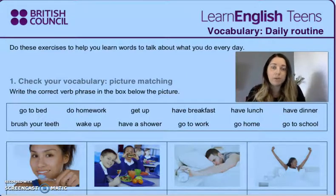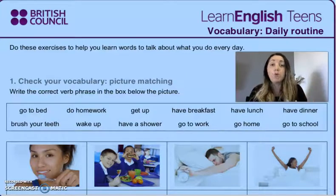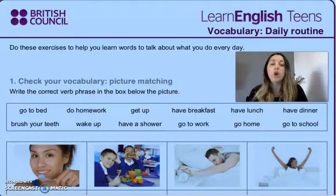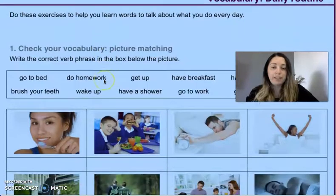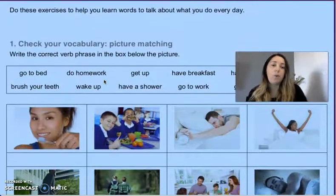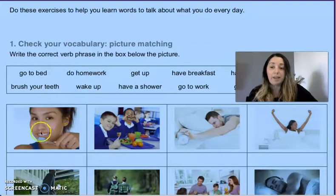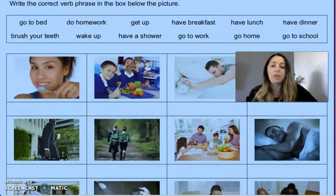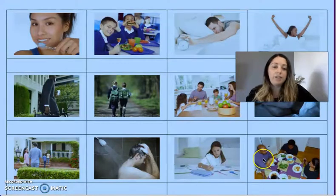You look at here — you have a box with some expressions: go to bed, do homework, get up, have breakfast, have lunch, have dinner, brush your teeth, wake up, have a shower, go to work, go home, go to school. Para esta primera actividad lo que van a hacer es mirar las imágenes y tratar de fijarse si pueden unirlas. No es necesario que las impriman — lo que pueden hacer es ponerle números a las imágenes: one, two, three, four... five, six, seven, eight, nine, ten, eleven, twelve.